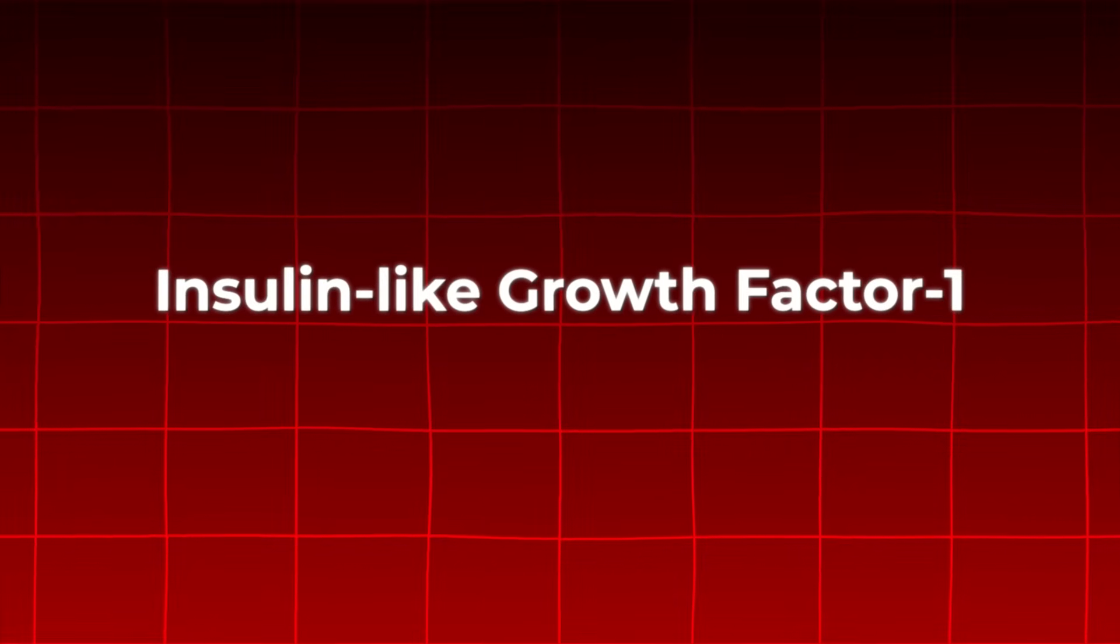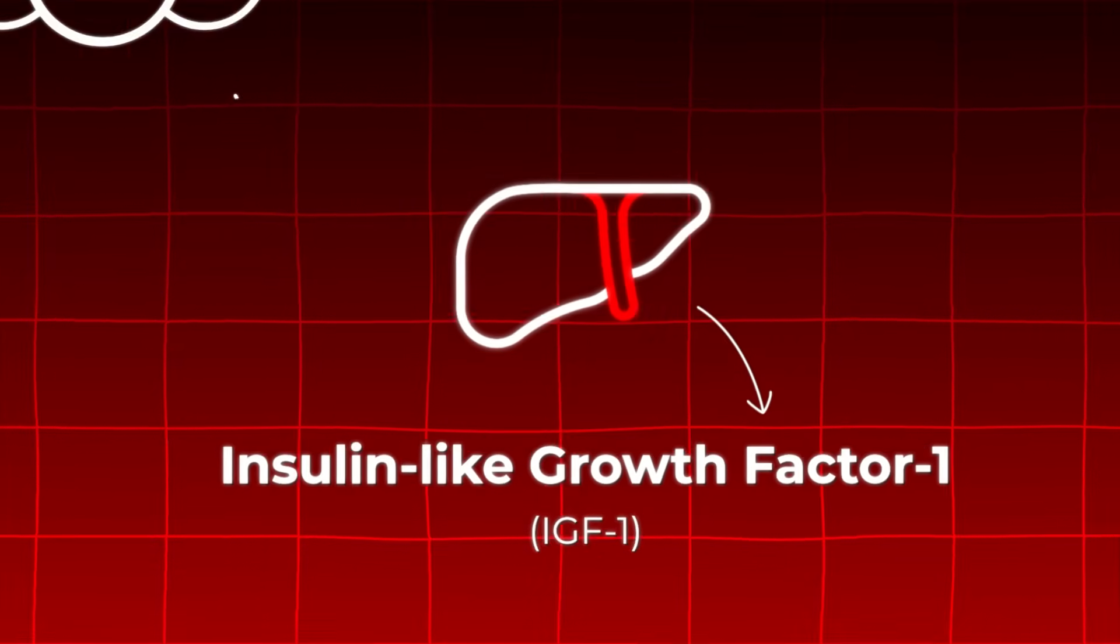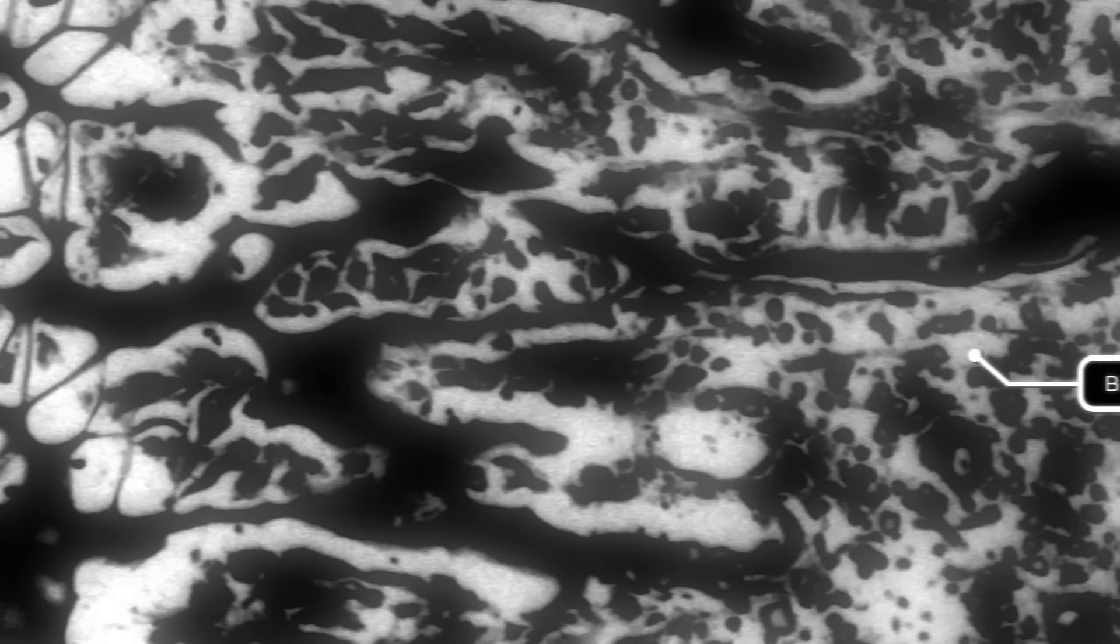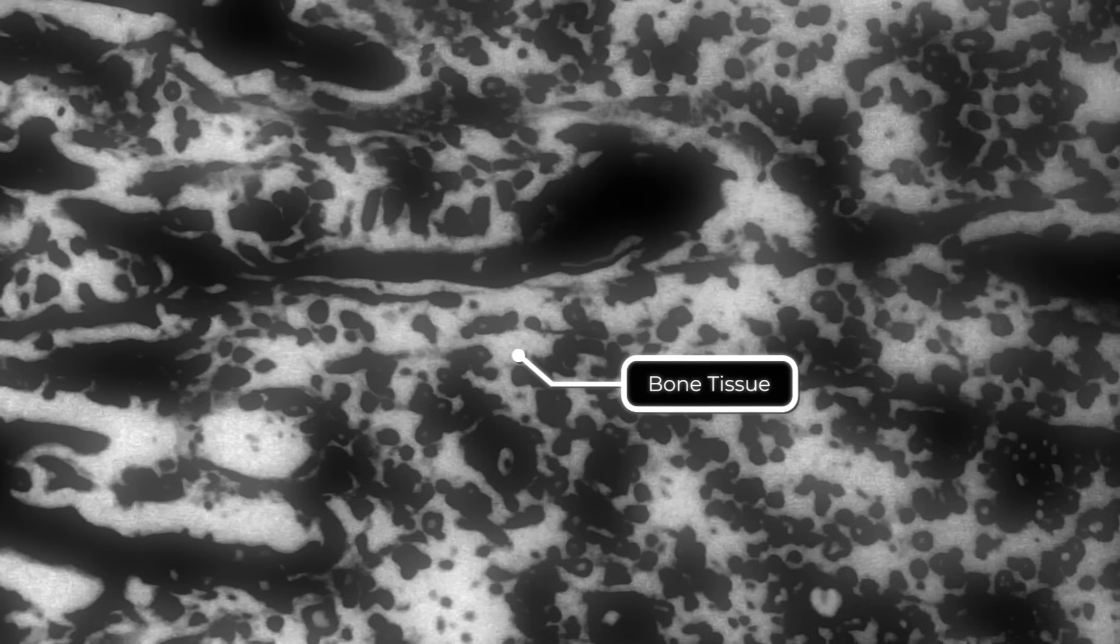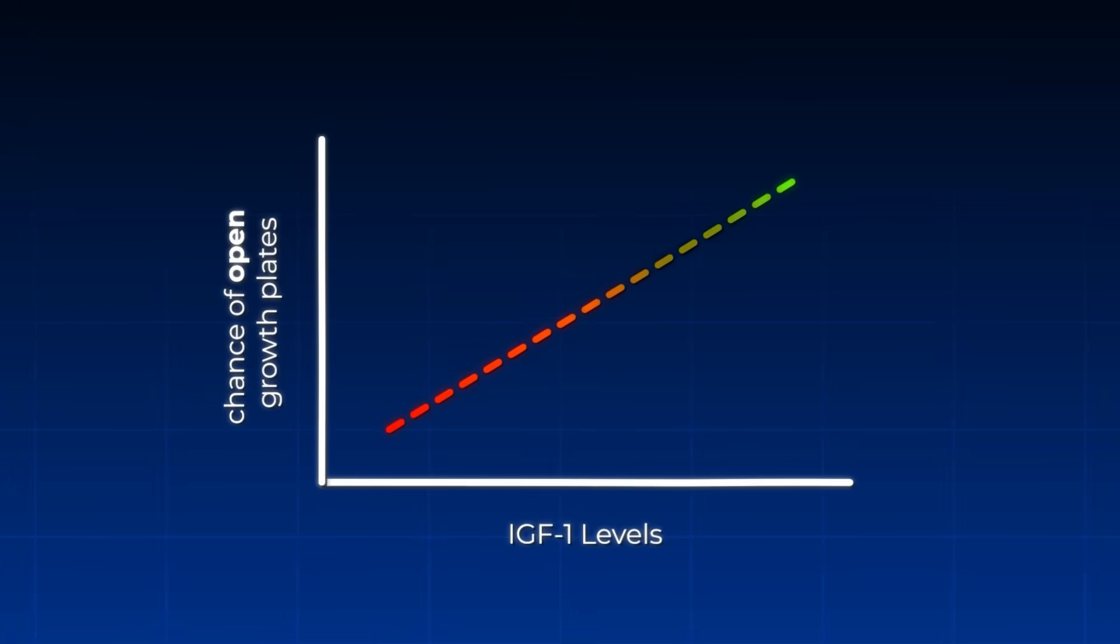Insulin-like growth factor 1, also known as IGF-1, is a hormone produced mainly by the liver in response to human growth hormone. It's important for stimulating cartilage cells in the growth plates. These cells are then gradually replaced by bone tissue, allowing the bones to grow longer. High IGF-1 levels suggest that your growth plates are likely still open.